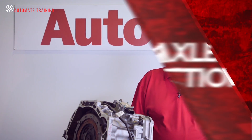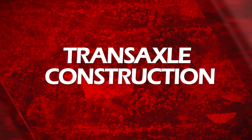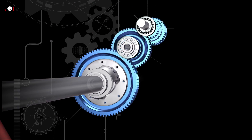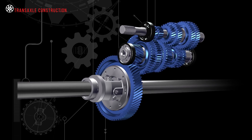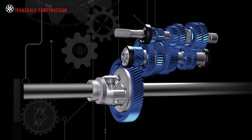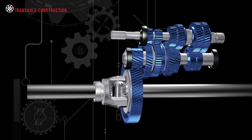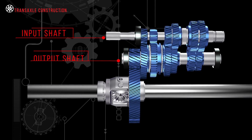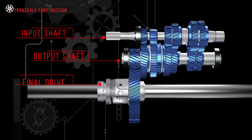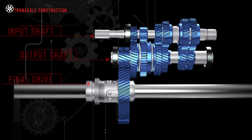Let's look at the operation of a five-speed transaxle and see how it differs from a conventional rear-wheel drive transmission. A transaxle has three shafts working in parallel to each other within the transmission compartment. They are called the primary or input shaft, the secondary or output shaft, and the final drive and drive shafts.